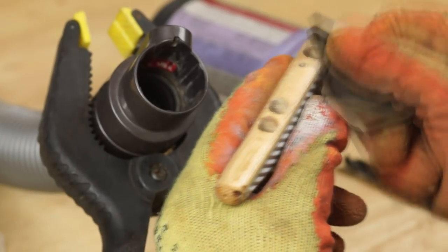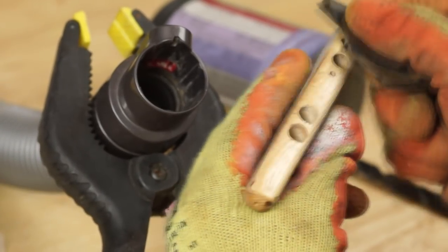With the lure balanced I can start to finish the body with some 400 grit sandpaper. Because the dust from sanding epoxy can be quite harmful I'm doing this over a vacuum hose.